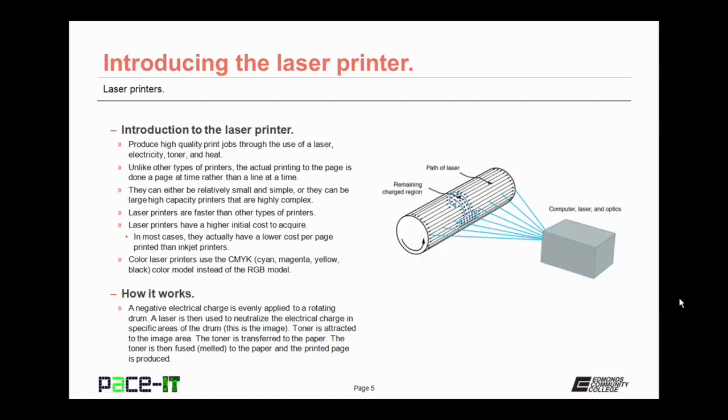So how does it work? Well, a negative electrical charge is evenly applied to a rotating photosensitive drum. A laser is then used to neutralize the electrical charge in specific areas of the drum. That is the actual page image, it's the neutralized area. Toner is attracted to the image area. The toner is then transferred to the paper. The toner and the paper are then sent to a fuser assembly where the toner is fused or melted to the paper and the printed page is produced.